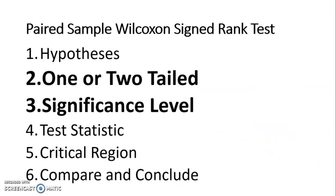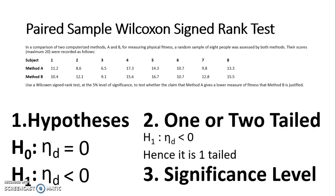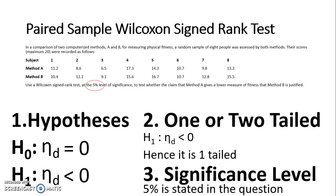Next on our list is one or two tailed and the significance level. Since our H1 is η_D < 0, that makes it one tailed — we're only caring about that lower end. The significance level is 5%, as specified in the question.